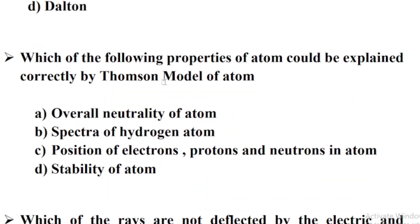Which of the following properties of atom could be explained correctly by Thomson Model of Atom? Option A: Overall Neutrality of Atom.